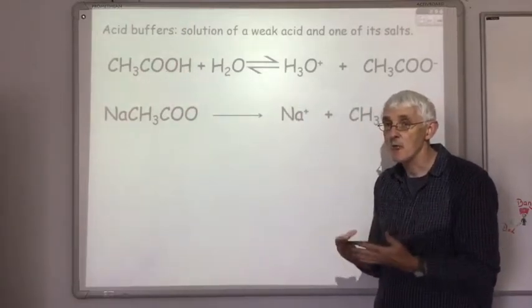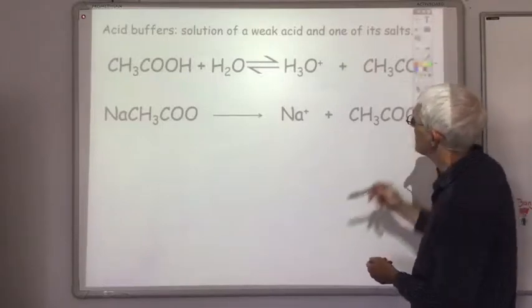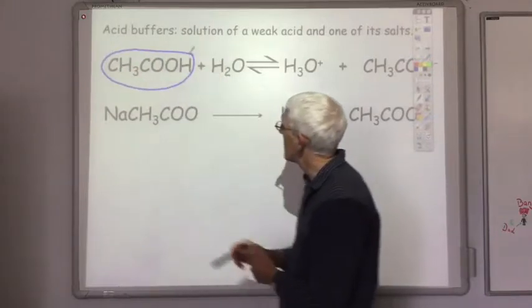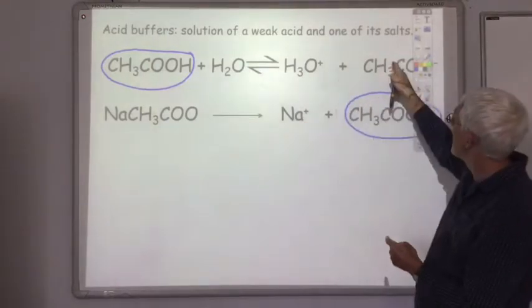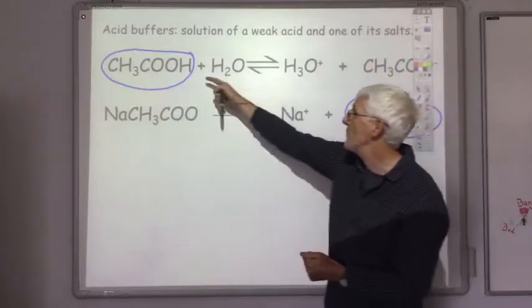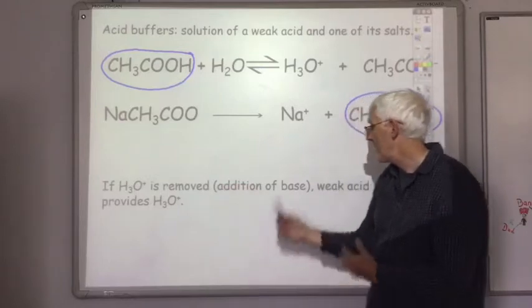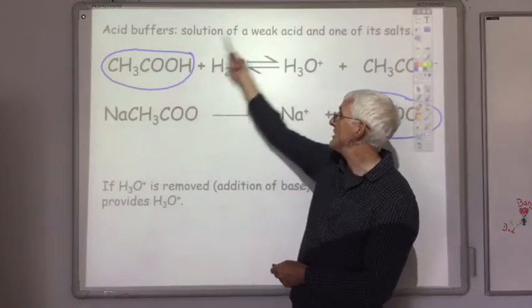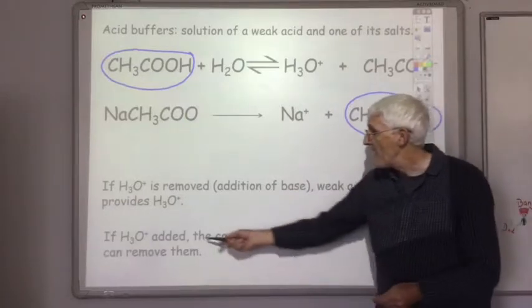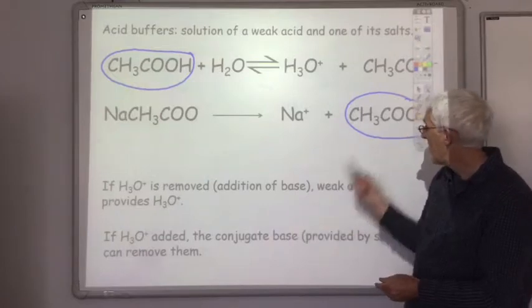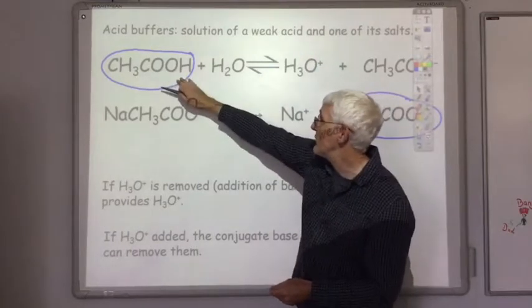So this buffered system can now cope with having more acid or more base added to it. The important thing to remember is in this system we've got loads of the ethanoate ions produced from the salt. We have hardly any of these ethanoate ions produced by the molecule dissociating. So if hydrogen ions are removed by the additional base, the weak acid dissociates to provide more hydronium ions or H+ ions. Or if more hydrogen ions are added, then the conjugate base provided by the salt can remove them. So the ethanoate ion combines with H+ ions to produce ethanoic acid and water.